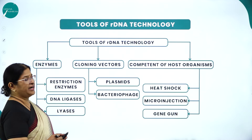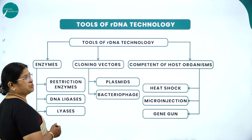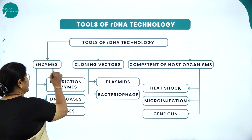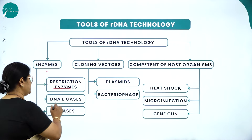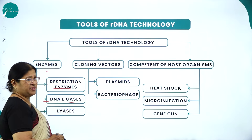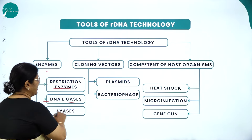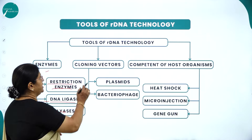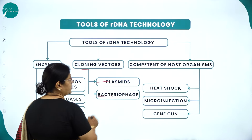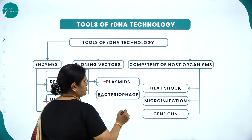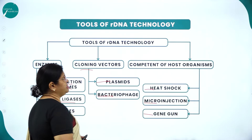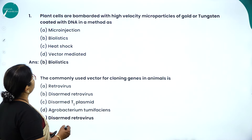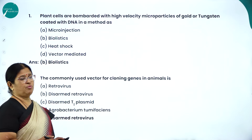Tools of R-DNA technology: enzymes like restriction enzymes (called molecular scissors) and DNA ligases (called molecular stitchers), then lyases, cloning vectors such as plasmids and bacteriophage, competent host organisms prepared by heat shock method, microinjection method, and gene gun method.